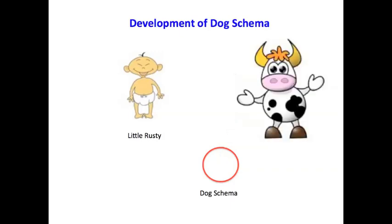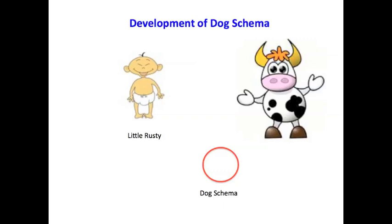Everything's worked out until Little Rusty sees a cow. What do you think Little Rusty does when he sees the cow? It's fuzzy, it may be big, but the first thing he does is say dog. Mama says no Little Rusty, that's not a dog. Little Rusty says it is a dog, and mama says no Little Rusty, it's not a dog. So Little Rusty goes through a time of disequilibrium.